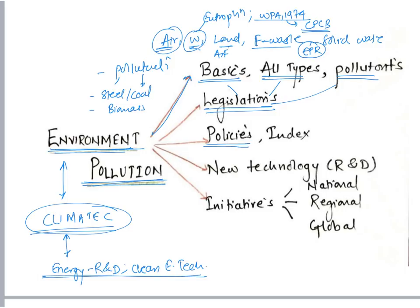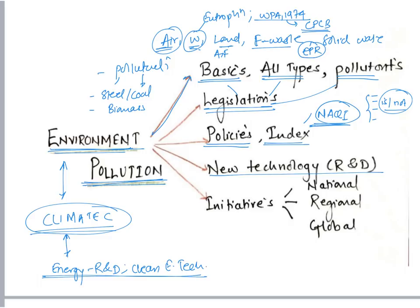While studying the various basics, types, and pollutants, simultaneously see if there are any rules or acts related to that particular type of pollution. Post that, know the various policies and measures — for example, UPSC has already asked about the National Air Quality Index and which pollutants are included in it. Know indexes related to various pollution, new energy technologies, and various initiatives related to pollution at national, regional, and global levels. For example, UPSC has asked about Green India Mission. At the global level, international organizations like UNFCCC will help in mitigating environmental pollution.